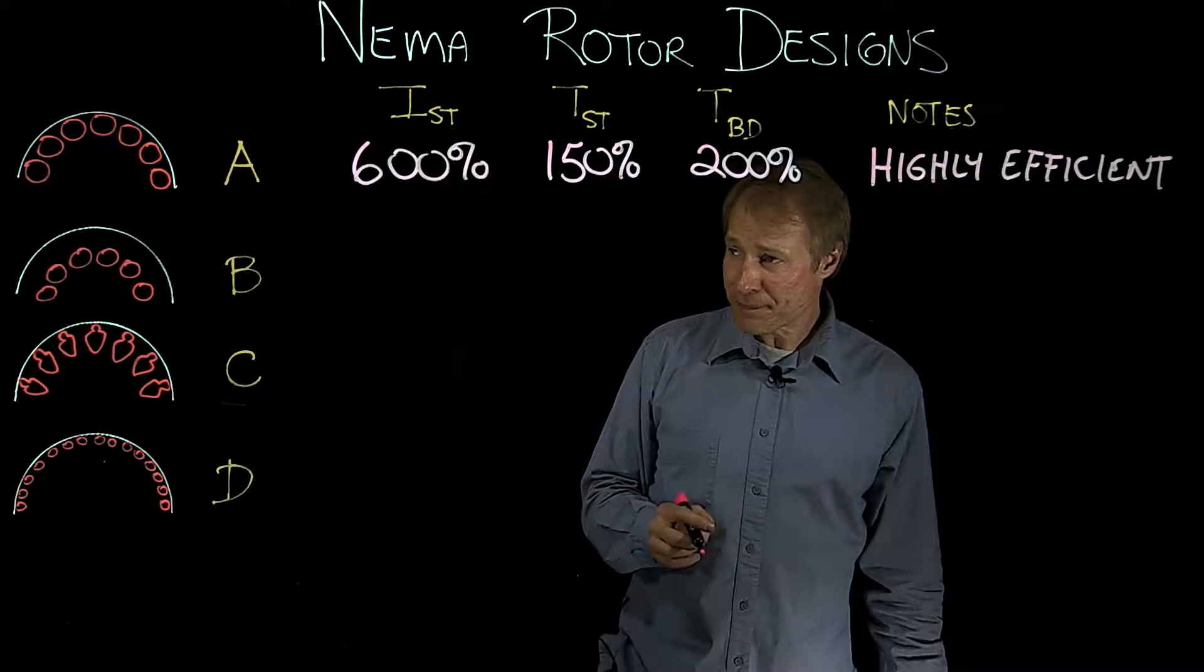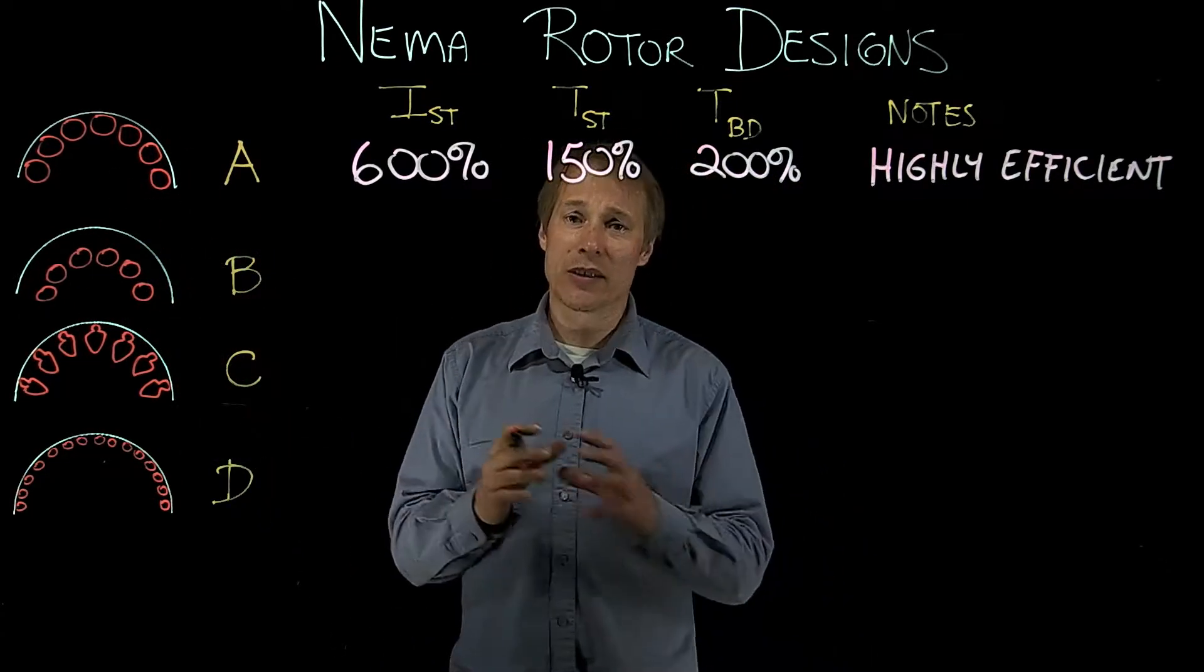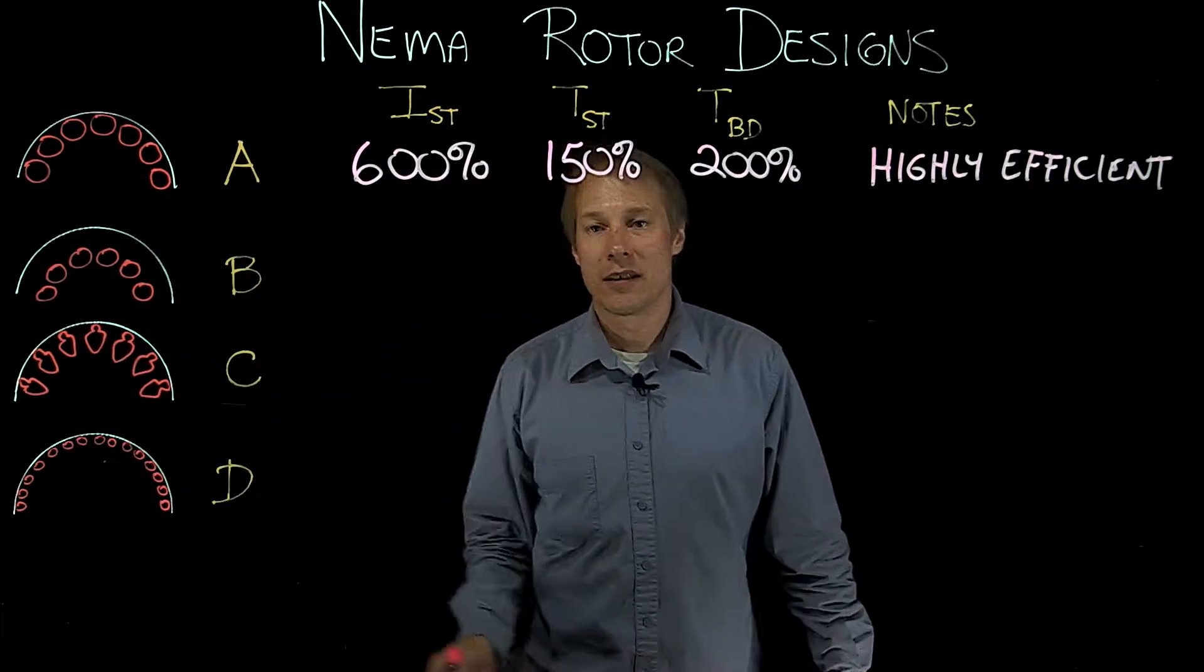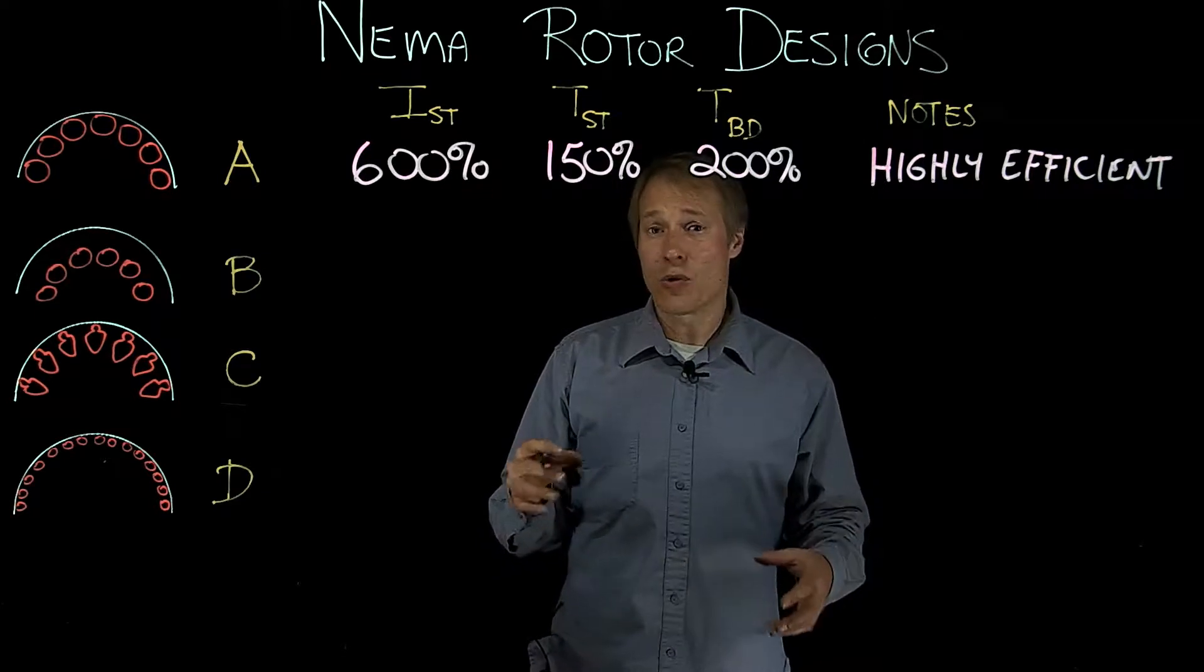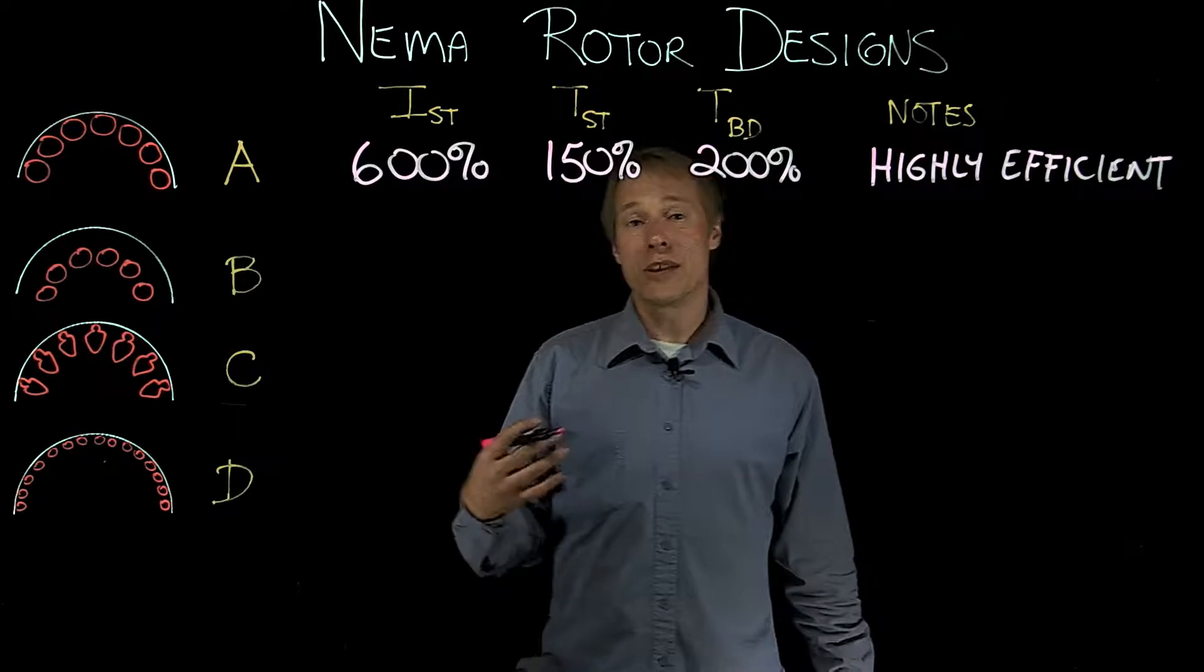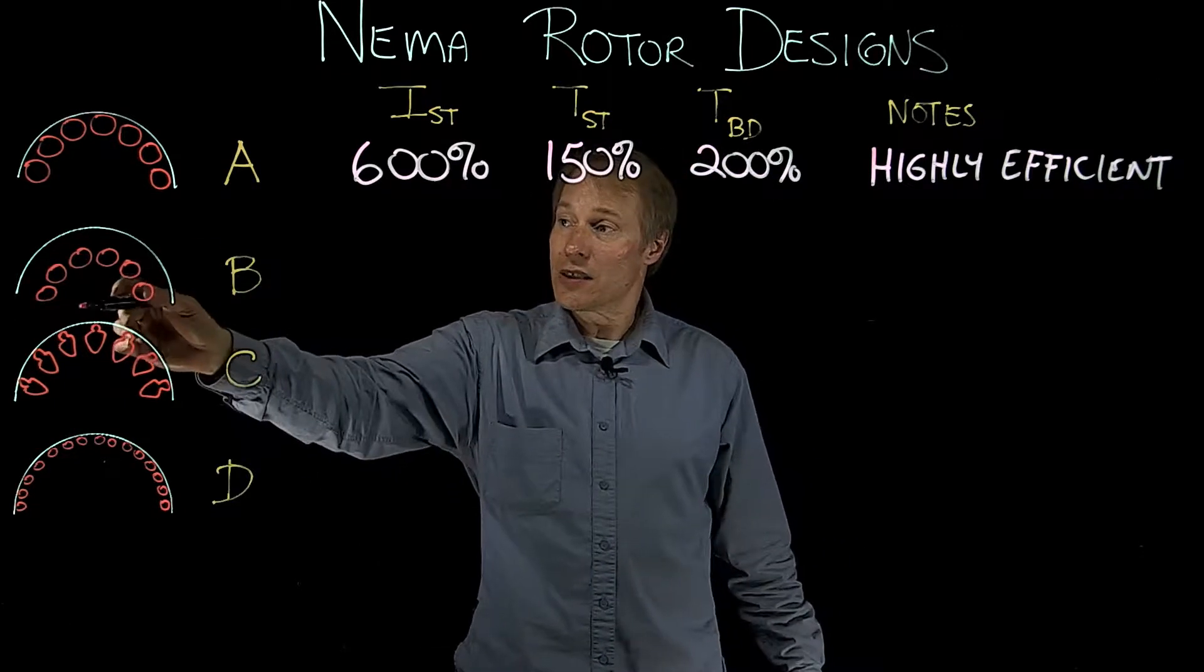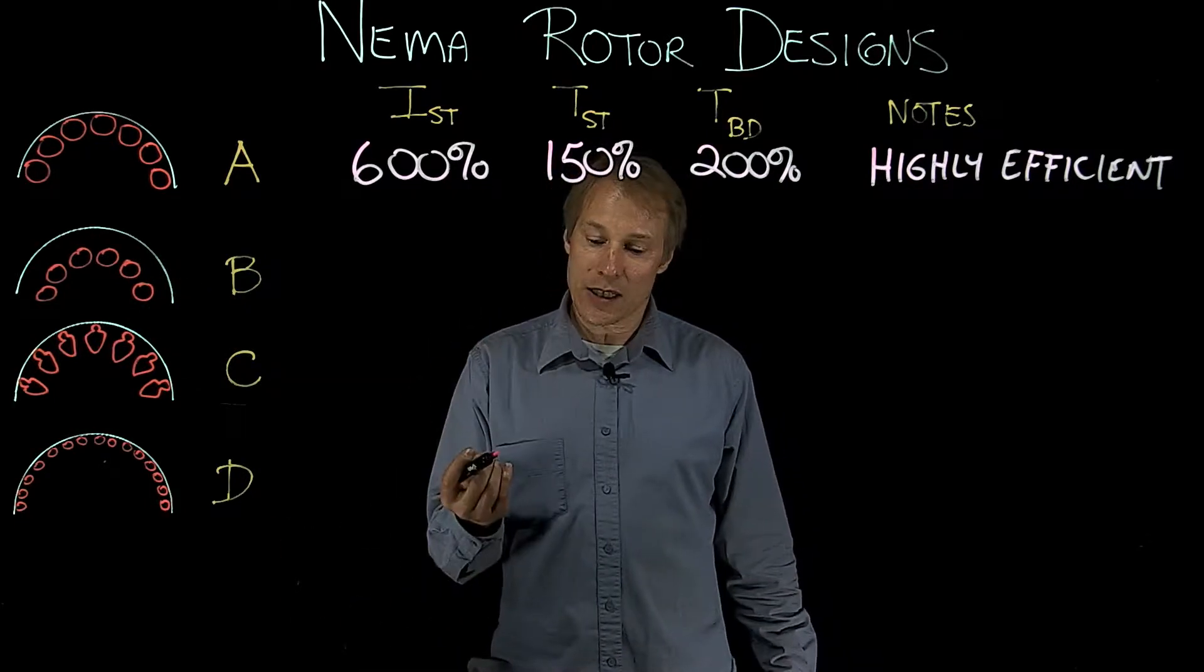Let's move on to rotor B. Now the difference between B and A is the rotor bars are the same size, but they're brought back from the edge of the rotor a bit and they're embedded in the rotor more, which changes the inductance, or it actually increases the inductance. And that will increase the inductive reactance. Now the resistance is going to stay the same, as you can see it's the same size bar. So the resistance stays the same.